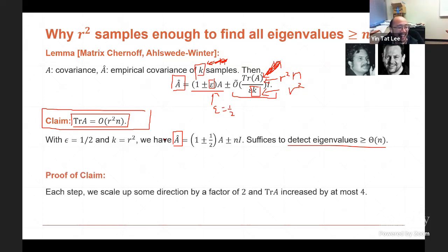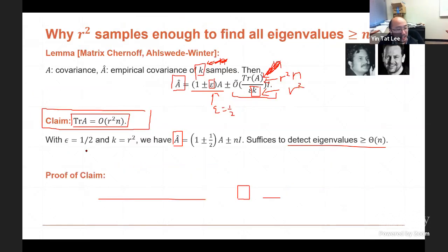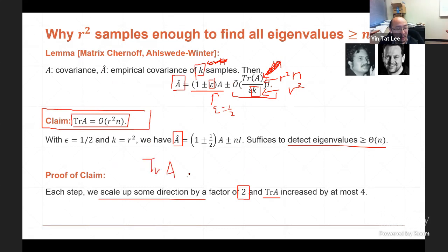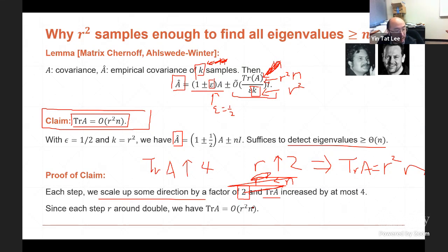The reason tr(A) ≤ R²·n holds is because each step we scale up some directions by roughly a factor of 2. Each step, tr(A) scales up by at most 4 (since covariance scales as square of the linear scaling), while R scales up by 2. We end when R² ≤ n, and initially tr(A) = n by the well-rounded condition. So the invariant holds, and there's nothing more to prove here.